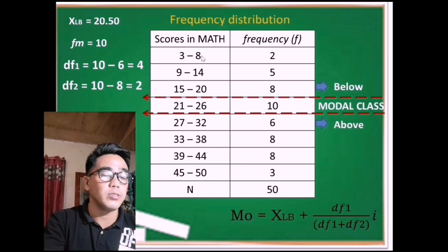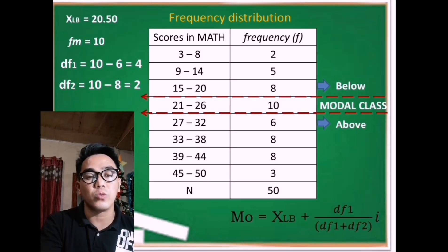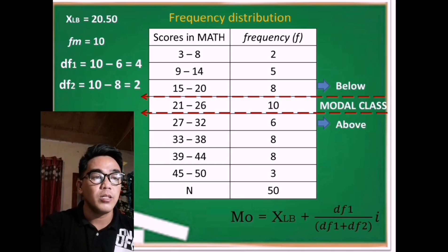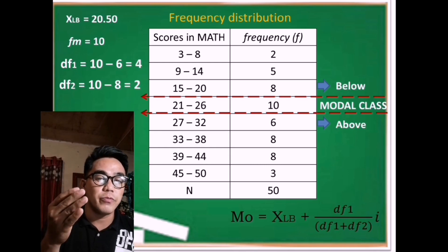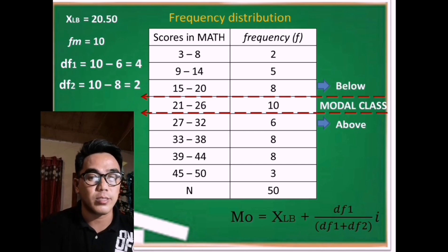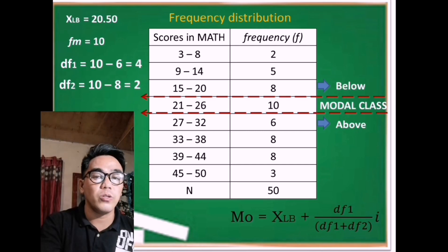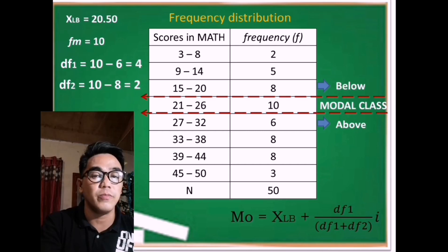The same thing as if we subtract 8 to 3, that is 5 plus 1, that is 6. Or, if we're going to count it individually, like 9, 10, 11, 12, 13, 14, there is still 6. The i or the class width of the class limit or class interval is 6.